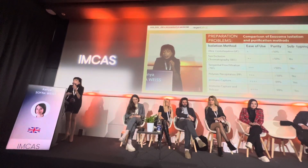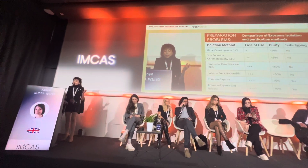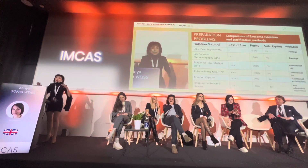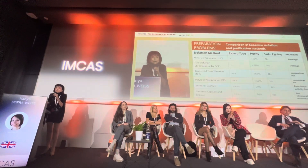The problem with exosomes is the preparation. There are many isolation methods: the ultracentrifugation process has about 50% purity and can damage the exosomes. Other methods also yield around 50%. The polymer precipitation method similarly gives about 50%. Immunocapture achieves about 99% purity — which is great — but it loses functionality. So again, you gain in one area and lose in another.